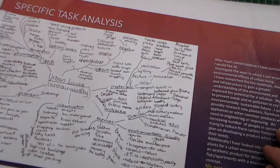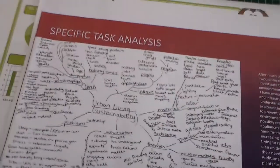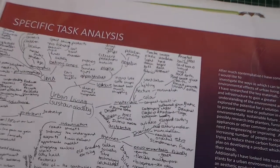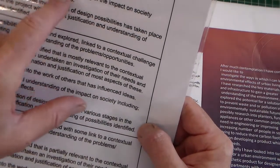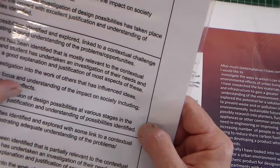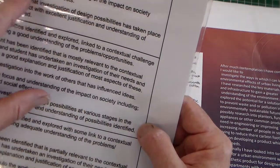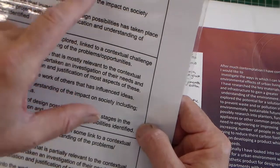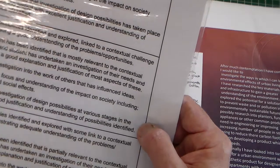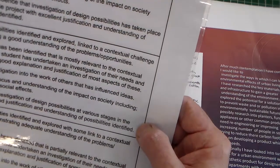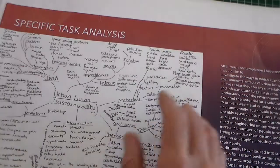We're looking at Sheet 3 here, and Sheet 3 we're calling Specific Task Analysis. We've got three responses here and they're more diverse from the examples. What we're looking at is the excellent design focus and full understanding for the impact on society, economic and social effects, starting to look at the work of others, and evidence of investigation of design possibilities. That's in this 9 to 10 mark band.